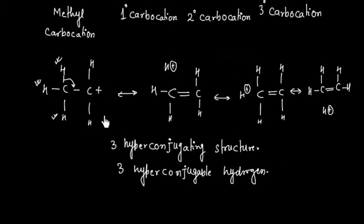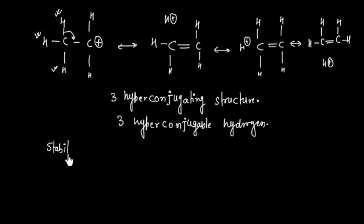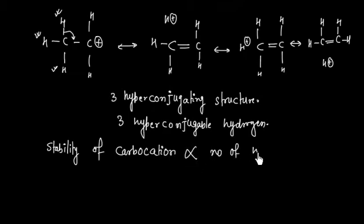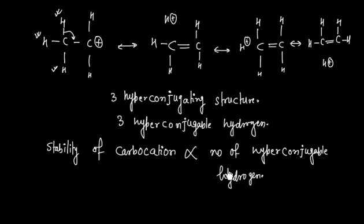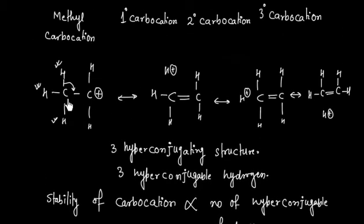If we have more hyperconjugating structures, electron dispersal will be greater. That means the stability of a carbocation is directly related to the number of hyperconjugable hydrogens — those hydrogens attached to the carbon adjacent to the positive charge, called the alpha carbon.